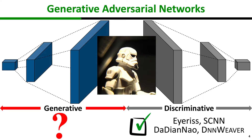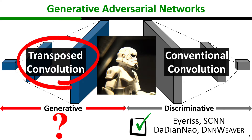However, while there are many works for accelerating discriminative models, there is a lack of accelerators that address the computational demands of generative models. But why not use the same accelerators for generative models? The answer is that GANs use a fundamentally new type of mathematical operator in the generative model, which is called transpose convolution.